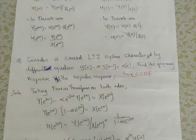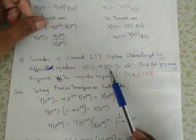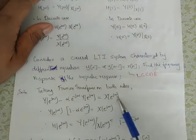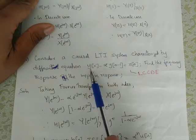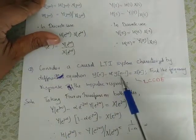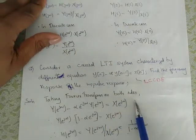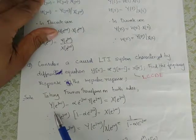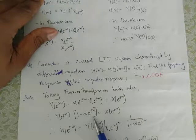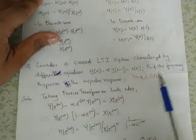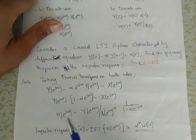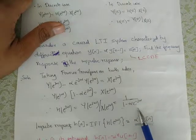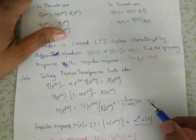For n minus 2, it is e raised to minus j-2-omega. Now, applying the Fourier transform to the difference equation: Y of e raised j-omega minus alpha times e raised minus j-omega times Y of e raised j-omega equals X of e raised j-omega. Factoring: Y of e raised j-omega times quantity 1 minus alpha e raised minus j-omega equals X of e raised j-omega. Therefore, the frequency response H of e raised j-omega equals Y of e raised j-omega divided by X of e raised j-omega equals 1 over 1 minus alpha e raised minus j-omega.